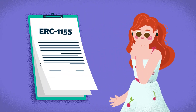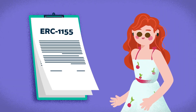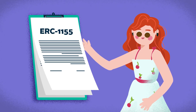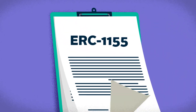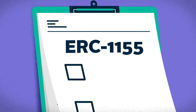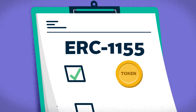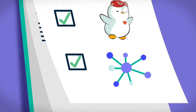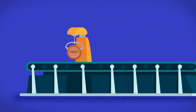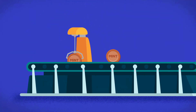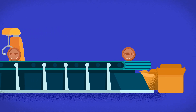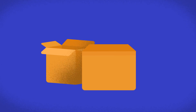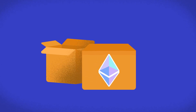This is where ERC1155 comes in — a standard created to tackle this challenge faced by game developers. It allows a single contract to support multiple types of assets, whether fungible, non-fungible, or even semi-fungible tokens. It also enables batch minting and transfers where multiple tokens can be minted or transferred in a single transaction, therefore better utilizing Ethereum's resources.